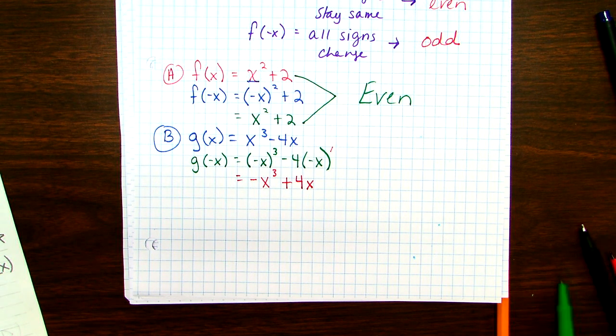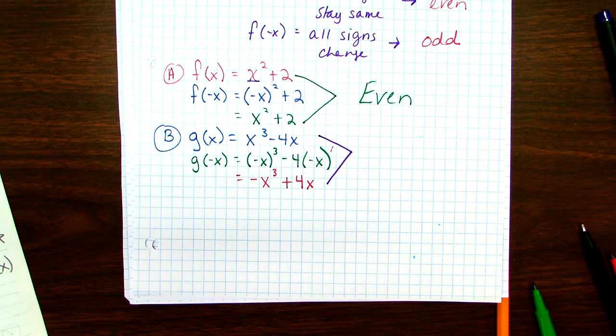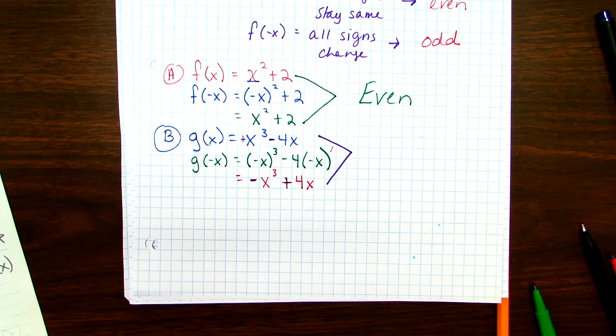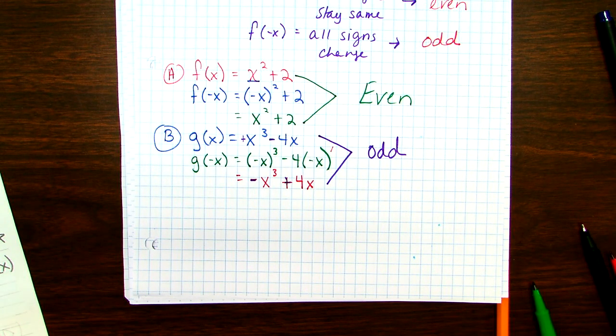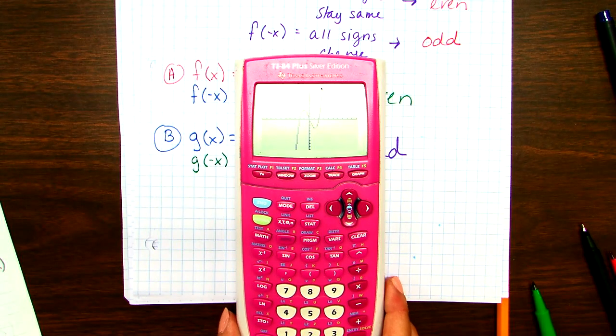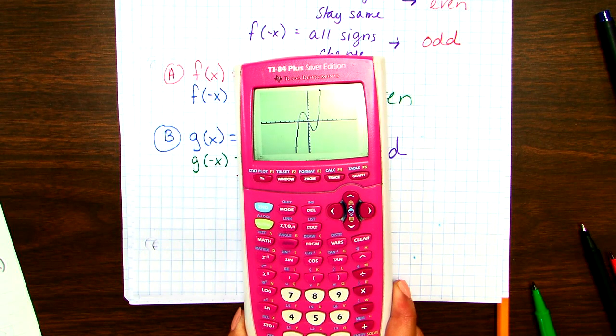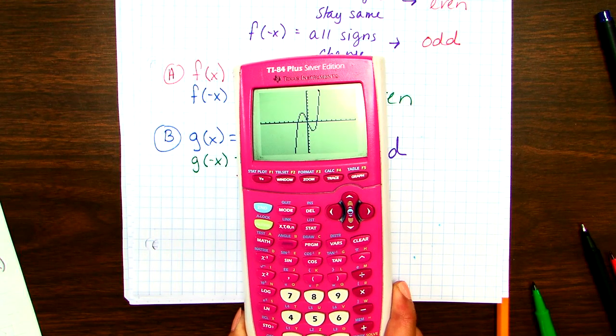So I look at my original and what I have now, and I compare. Did all signs stay the same? Nope. Look, X to the third is positive, X to the third is negative. Did all signs change? Yes. We went from positive to negative, negative to positive. That's what I mean by all signs changing. That means this is odd. I will show it to you. X to the third minus four X. So if you look at the picture here, the opposite quadrants are the same, and it goes through the origin. That's really, really important. It has to go through the origin. That's odd.